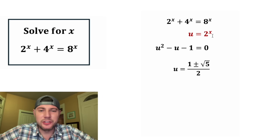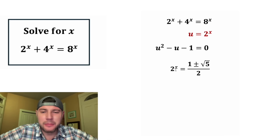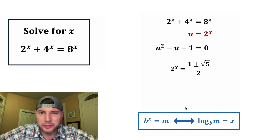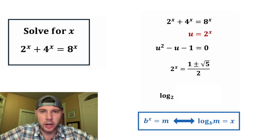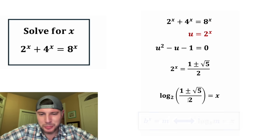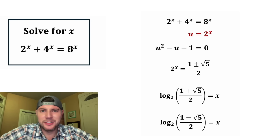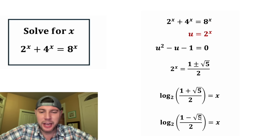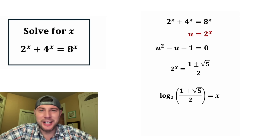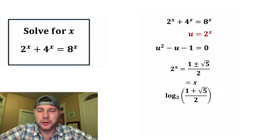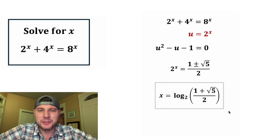Now we can re-plug in 2 to the x for u. Anytime you have a variable in the exponent, it's easiest to solve using logarithms. We rewrite in log form: the base of the exponent is the base of the log, and the argument gives us x. There's a plus or minus, so there are two separate logarithms. The minus case gives a negative inside the logarithm argument, which is not defined. So the fully simplified answer is x equals log base 2 of the quantity 1 plus square root of 5, over 2.